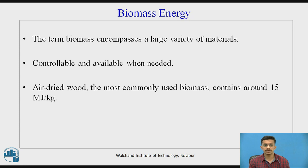Air-dried wood, which is the most commonly used biomass, contains around 15 MJ per kg of energy. But if it is oven-dried before it is burned, it yields around 18 MJ per kg.